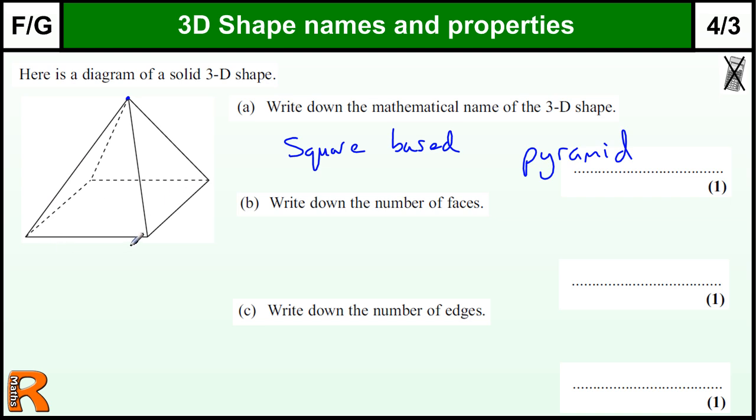Now, the one shape that people tend to get this a little bit confused with is a prism. This is not a prism, because prisms don't go to a point. The thing about a prism, if we had a triangular prism, we'd be looking at this sort of Toblerone box shape, where it's the same shape all the way through. So if you cut it anywhere along its length, it would be the same shape. That's what a prism is.